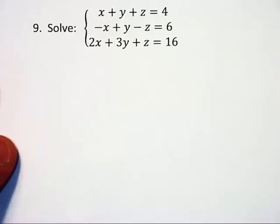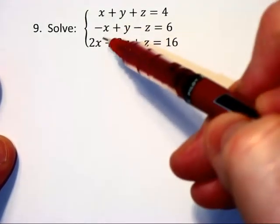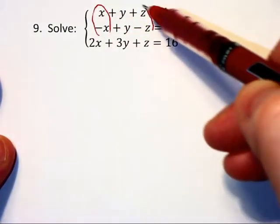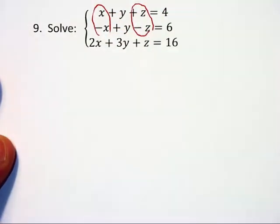Solve this system. We are not told that we need to use any particular method, and since we see right off the bat here that the x's will cancel and the z's will cancel when we add these first two equations together,